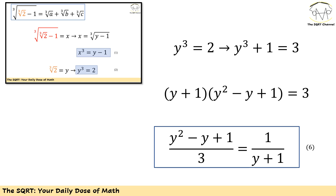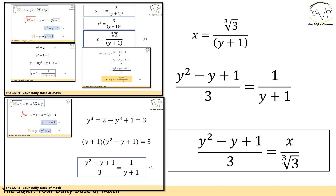Now I'm going to use another trick. Remember y cubed equals 2 from equation 2. Adding 1 to both sides gives y cubed plus 1 equals 3. Applying the sum-of-cubes identity, we find that 1 over (y + 1) equals (y squared minus y + 1) over 3. This is equation 6.